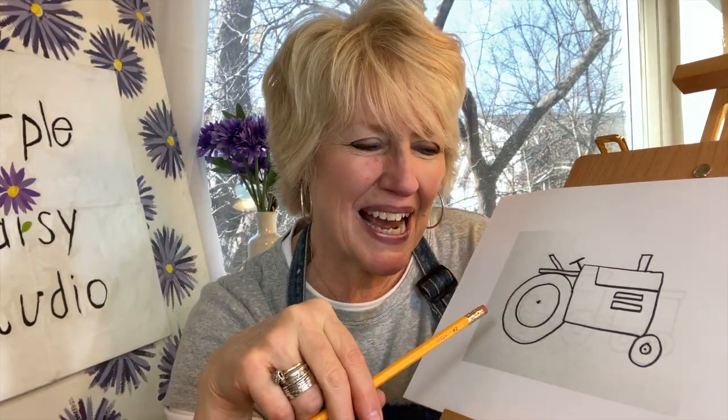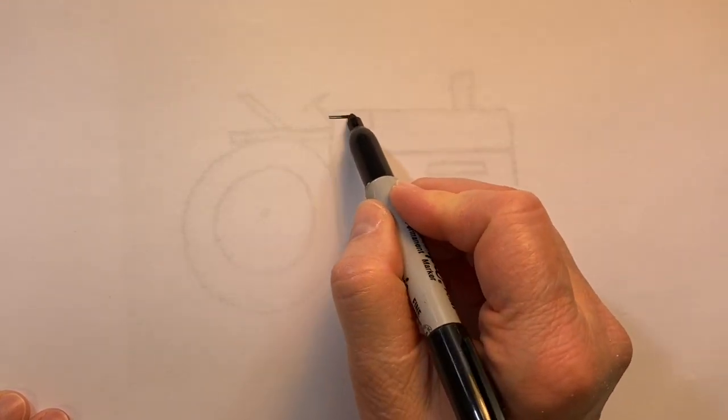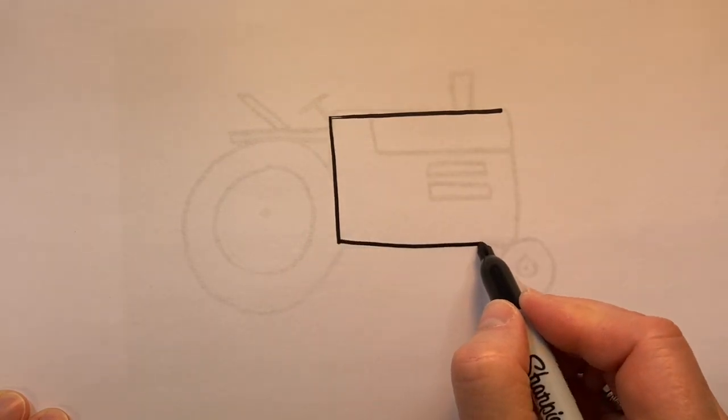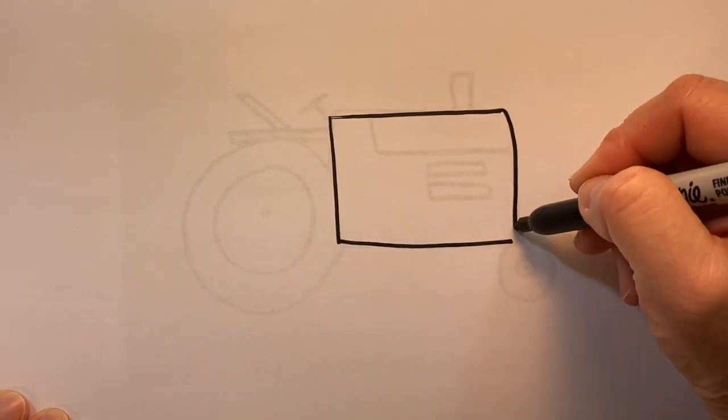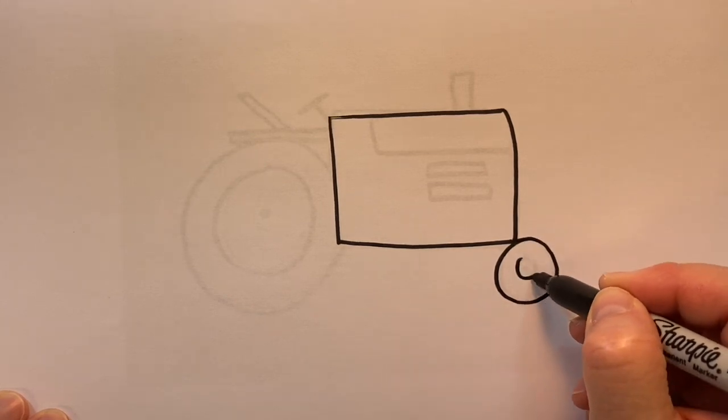We're drawing a tractor. I'll first draw a square for our tractor and a circle for the front of the tractor, the wheel.